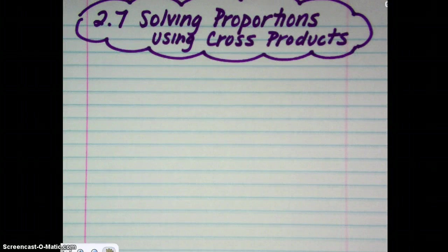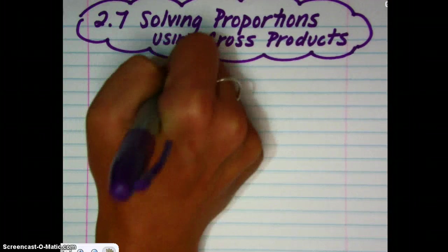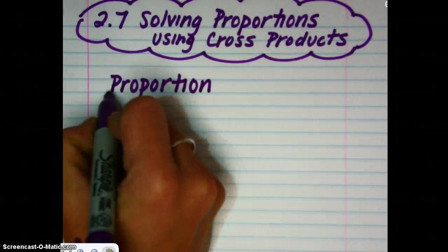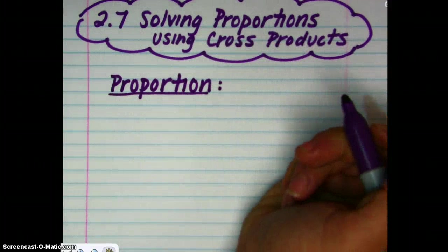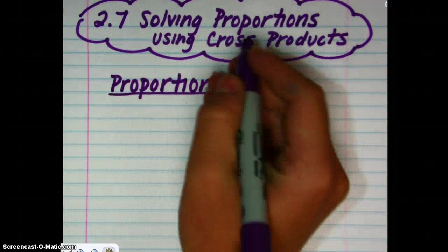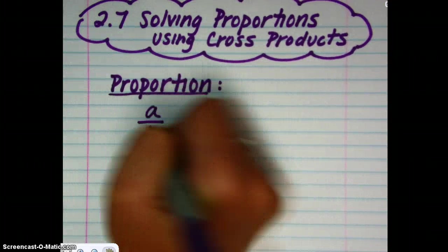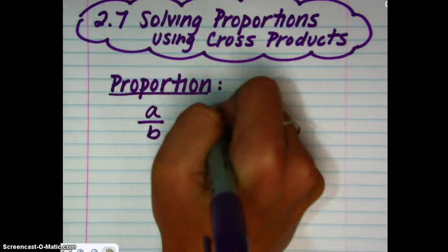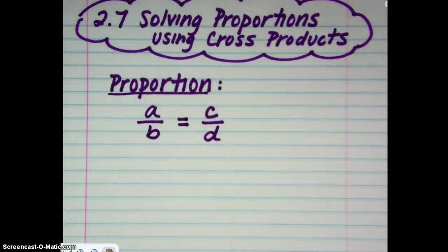Let's just review what a proportion is. A proportion is an equation that shows that two ratios are equivalent. So, for example, the ratio of A to B being equal to C to D. That would be a proportion.